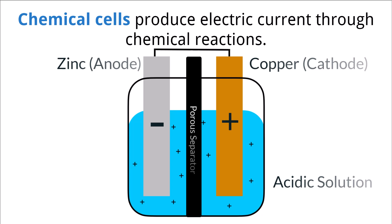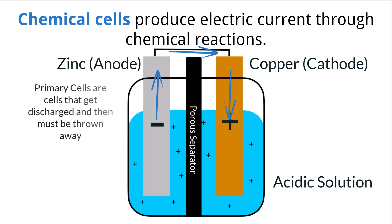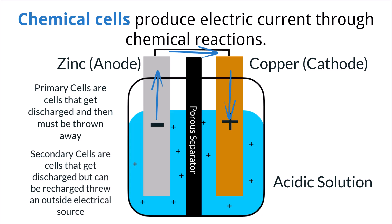Chemical cells, more commonly known as batteries, use a chemical reaction to produce a charge difference between the positive and negative terminals. This potential difference generates a force which propels electrons from the negative terminal towards the positive terminal. The chemical reaction is driven by the flow of charges, and thus electrons gain energy from the chemical reaction. There are two major forms of these chemical cells: primary and secondary. Primary cells are completely discharged when all of the chemicals have reacted and are then thrown away. Secondary cells are chemical cells that can be recharged by plugging into an electric power source, which sends charge in an opposing direction through the cell, making the chemical energy available again.